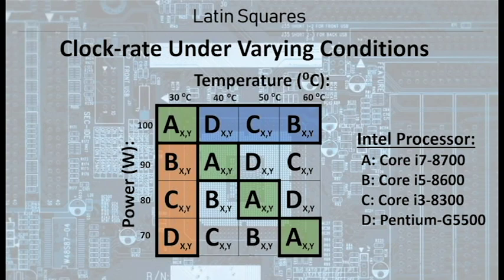In this example, we attempt to use a Latin square to determine what factor plays the biggest role in the clock rate of a CPU. We take power to define our rows, temperature to define our columns, and the processor types to define our treatments.